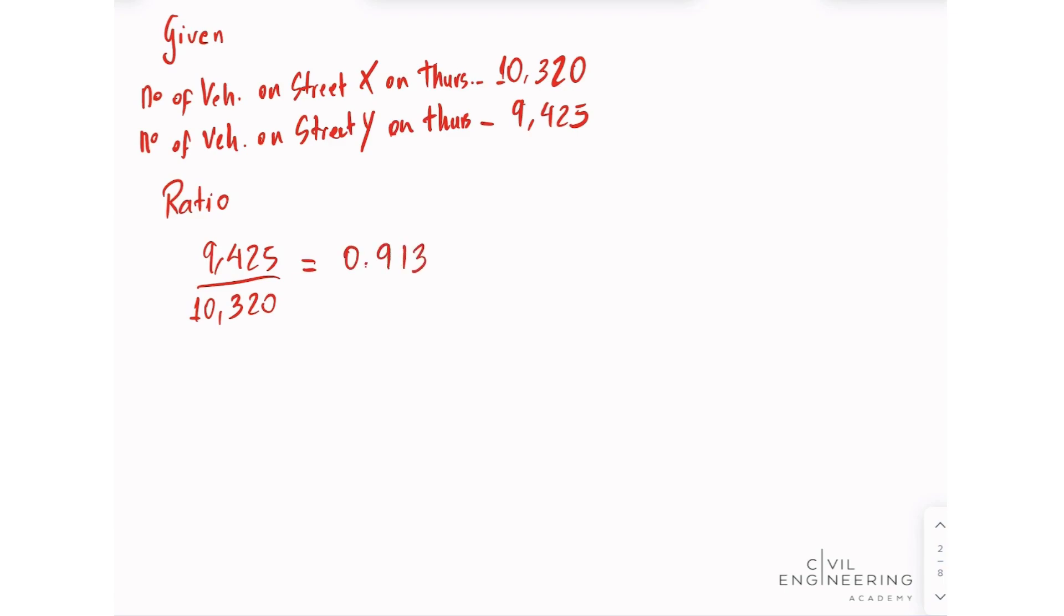And we can now calculate the average daily traffic volume for street X. So we can calculate the average daily traffic as the summation of each count for each day divided by the total number of days, just an average. So let's do that. Let's put these values here.